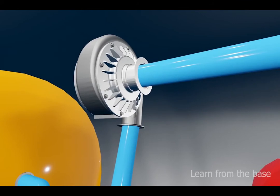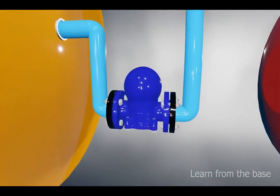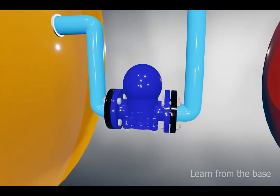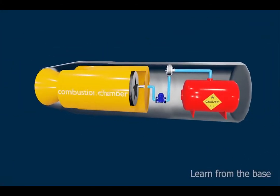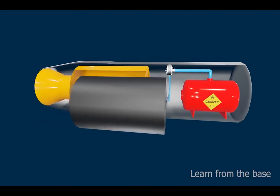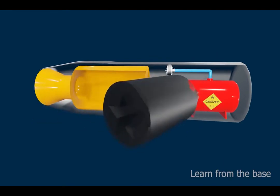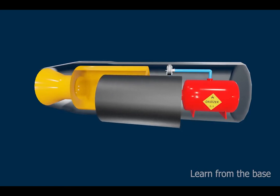Furthermore, using a solid fuel such as hydroxyl-terminated polybutadiene (HTPB) or paraffin wax allows for the incorporation of high-energy fuel additives such as aluminium, lithium, or metal hydrides. Despite the use of the term hybrid, a hybrid rocket engine (HRE) is a distinct form of rocket engine that uses both solid and liquid propellants. Liquid-solid rocket engine, or LSRE, would be a more accurate term.